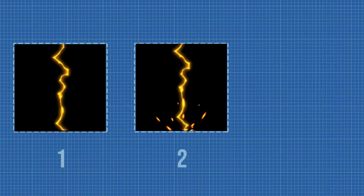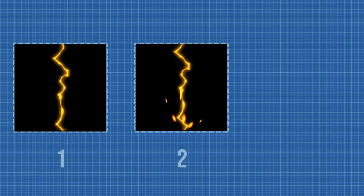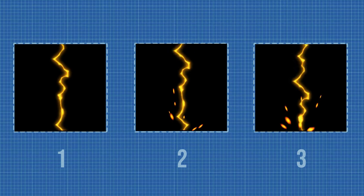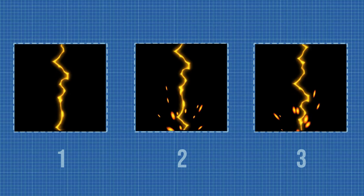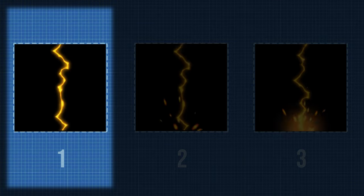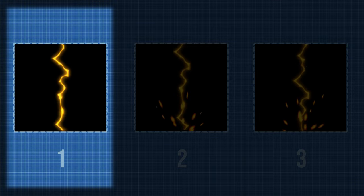This tutorial will be divided into 3 parts. First we will create the main thunder effect, then we will add some nice sparks to the thunder impact point, and finally we will add some animations and extra details. Let's start with the main thunder beam.